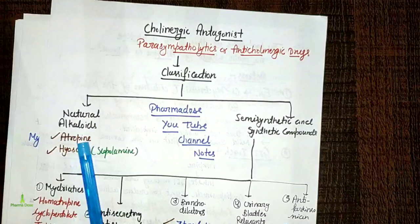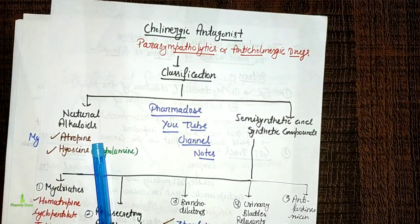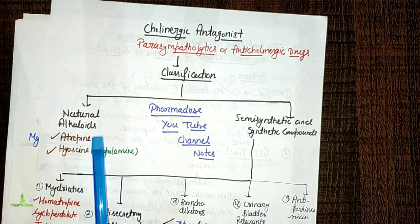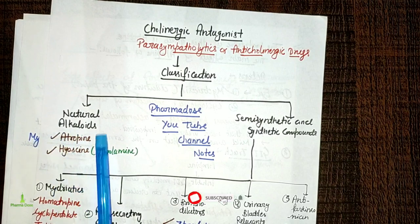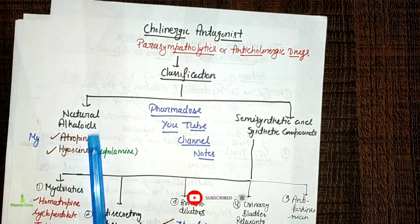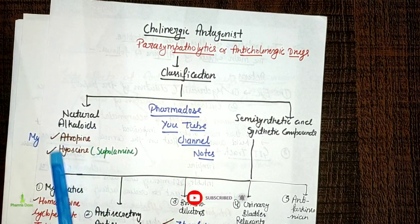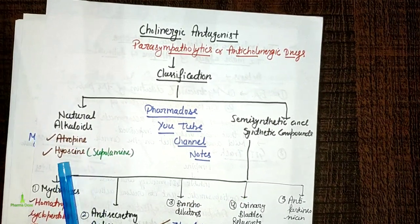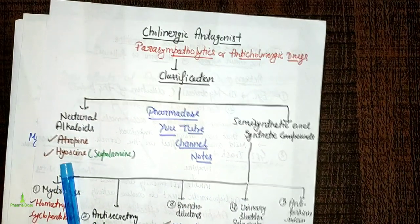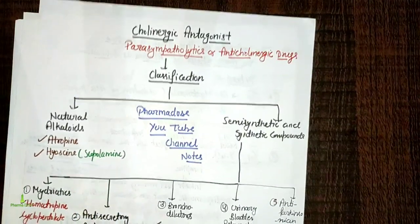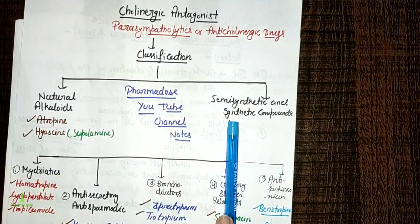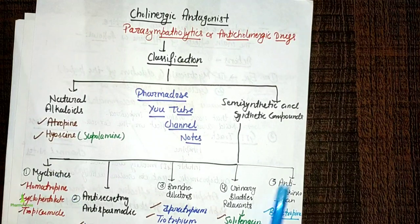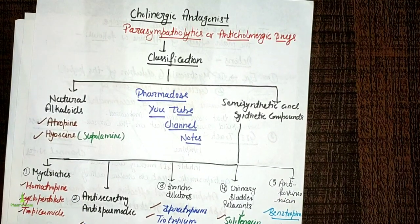The natural alkaloids in this group are atropine and hyoscine. The semi-synthetic and synthetic compounds are further classified into subcategories based on their clinical use.